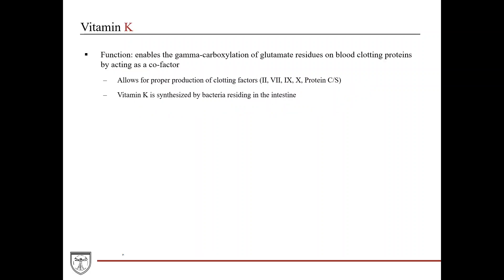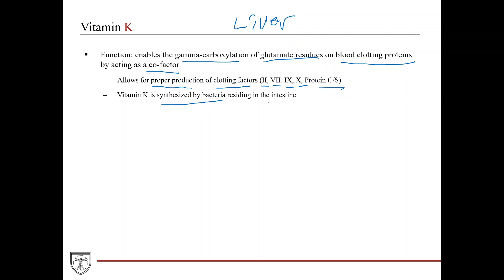Vitamin K is critical for the clotting cascade. It enables gamma carboxylation of glutamate residues on blood clotting proteins, acting as a cofactor for that reaction in the liver. This allows proper production of clotting factors 2, 7, 9, 10, and proteins C and S. Vitamin K is obtained from diet and is also synthesized by intestinal bacteria. Therapeutically, vitamin K can be given for warfarin overdose to replenish clotting factors and reduce bleeding risk.